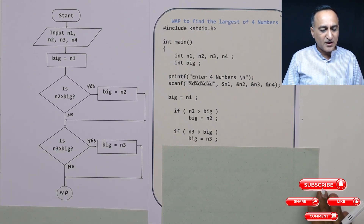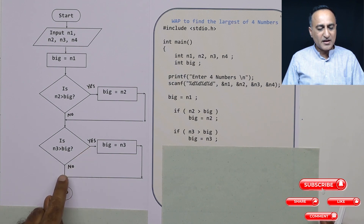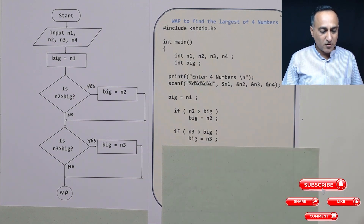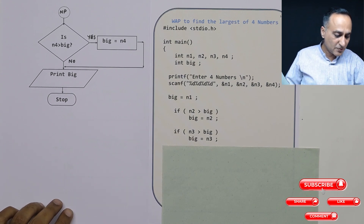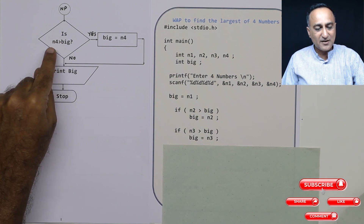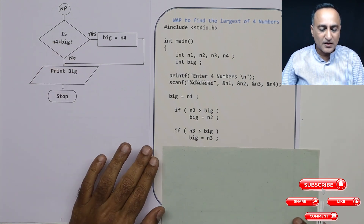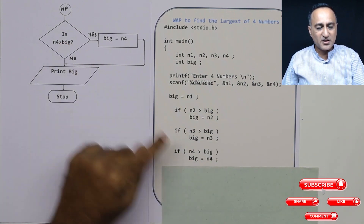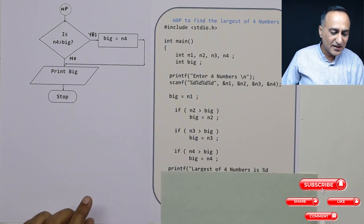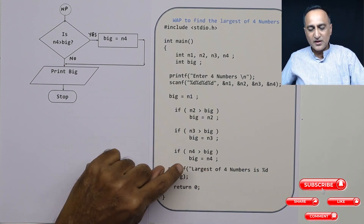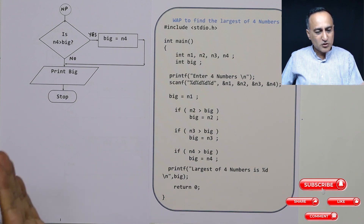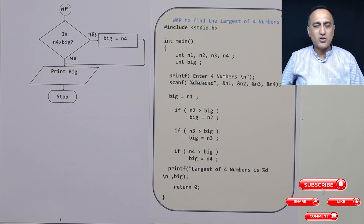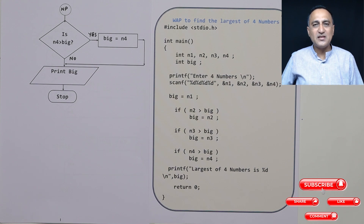The only number left to process is n4. Since the flowchart travels beyond a page, I use a connector character. On the next page, I check: is n4 greater than big? If true, I replace big with n4. Finally, in the last step, I print: the biggest of four numbers is big, using printf with %d and big. You can observe how a flowchart is easily transformed into a logic. Please do not skip learning logic — whether through algorithms or flowcharts — before coming into programming. Then programming becomes easy and enjoyable.